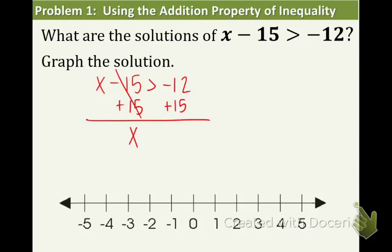We have x on the left and then we have to combine negative 12 plus 15. Another way to think about that is 15 minus 12, and that's 3. Now how do we graph this? First of all, we see that there's no line underneath, so it's going to be an open circle. That means we're not including the endpoint of 3.